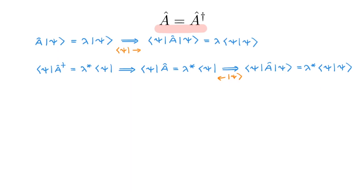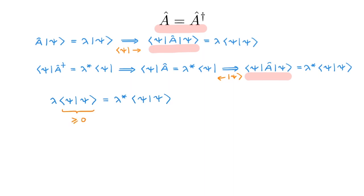The left-hand sides of the two resulting equations are the same, so the right-hand sides must also be the same. Equating them leads to an equation relating lambda and lambda star. Since the scalar product of a ket with itself is a positive number and is only zero for the null vector, the bracket will not be zero in general, so lambda star must equal lambda for this equation to hold. This in turn implies that lambda is a real number — therefore the eigenvalues of a Hermitian operator are real numbers.